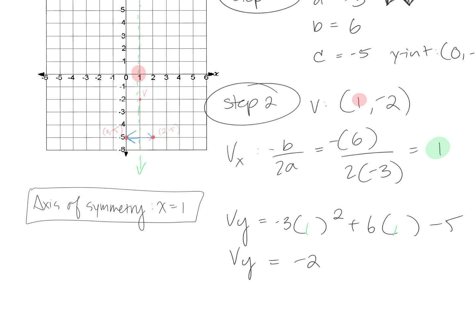We'll go ahead and graph in our axis of symmetry line. The domain is all the x values. Since we have negative infinity and positive infinity on both ends, we're using all real numbers for x. For the range, we use all y values, but we stop at negative 2 — we don't go any further up. So the range is negative infinity to negative 2.